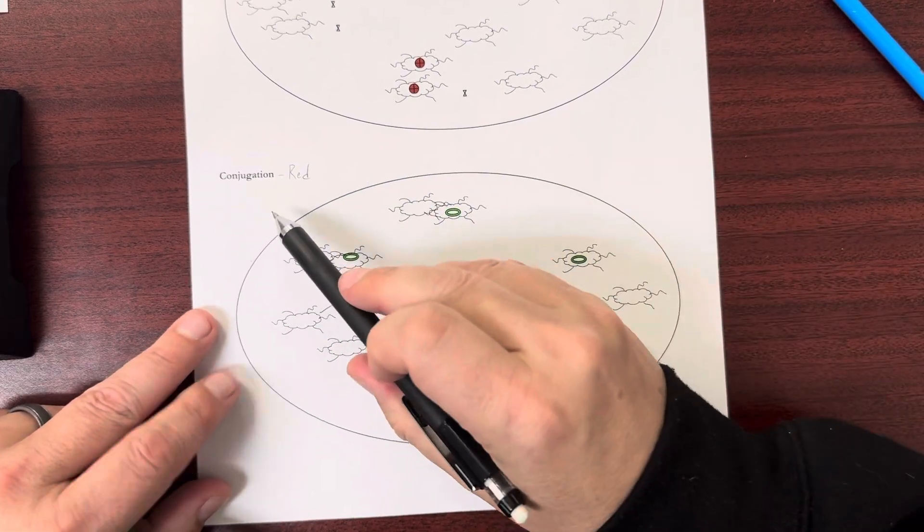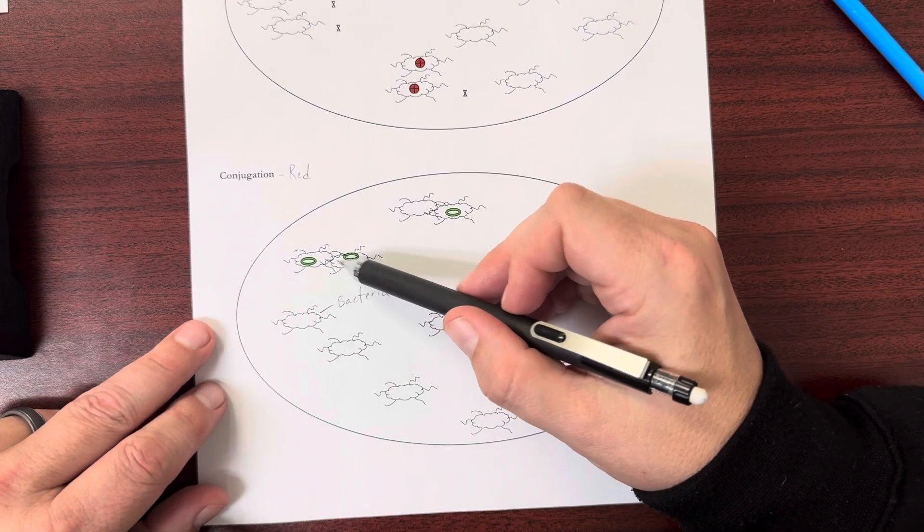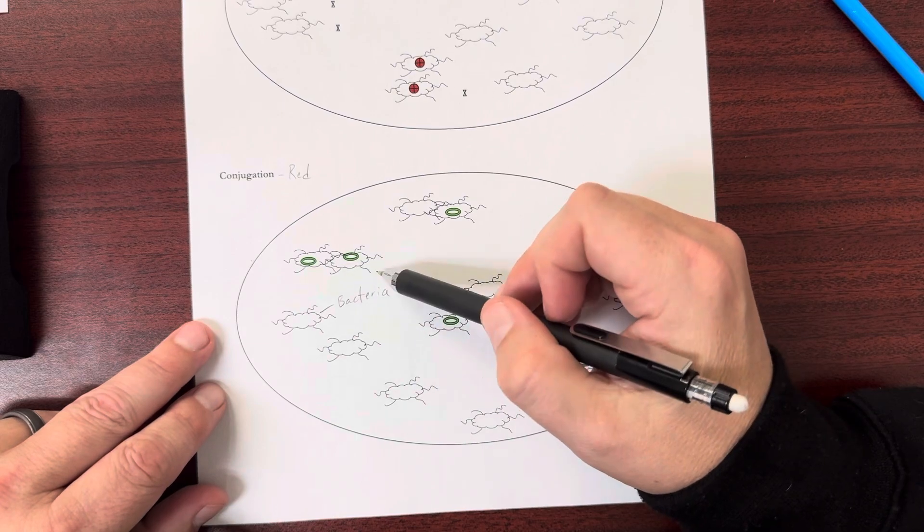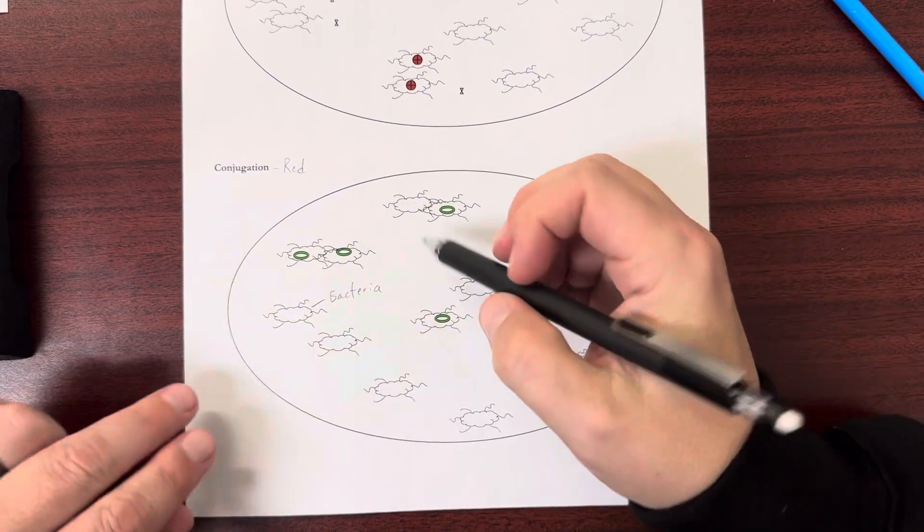In conjugation, what they do is they get close enough where they can actually swap genes with each other. So this is direct physical contact swapping genes back and forth.